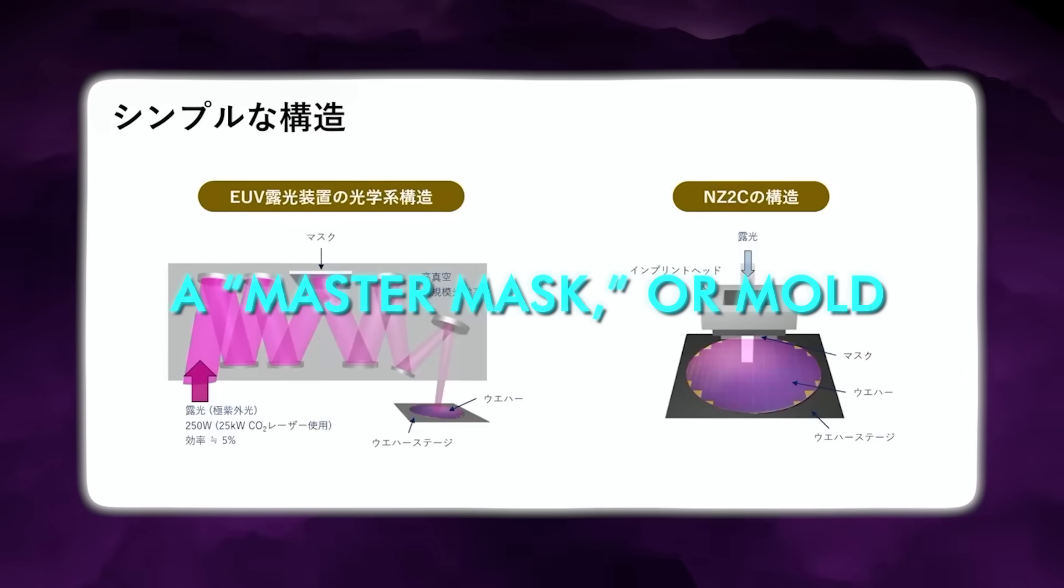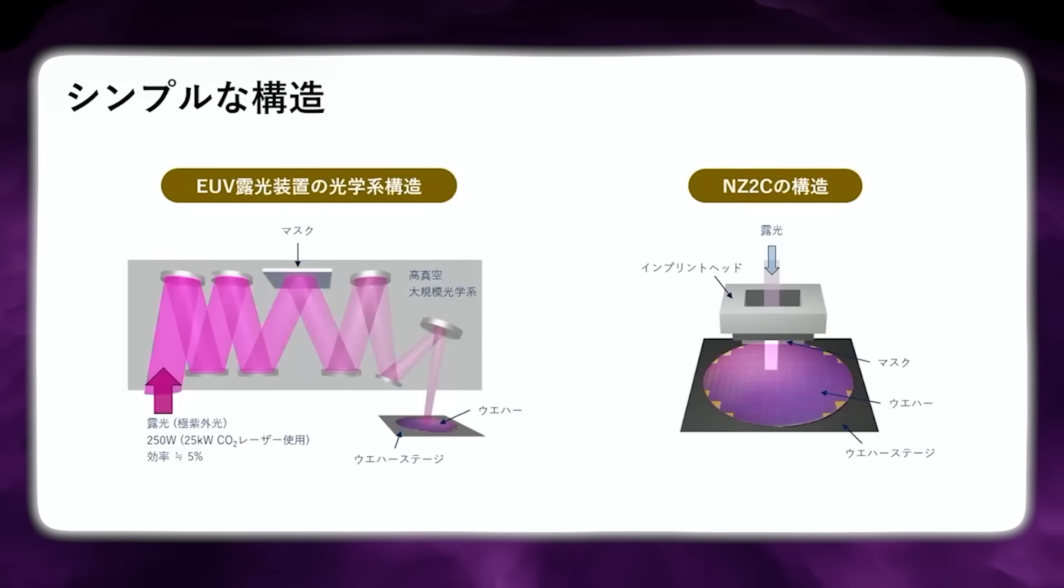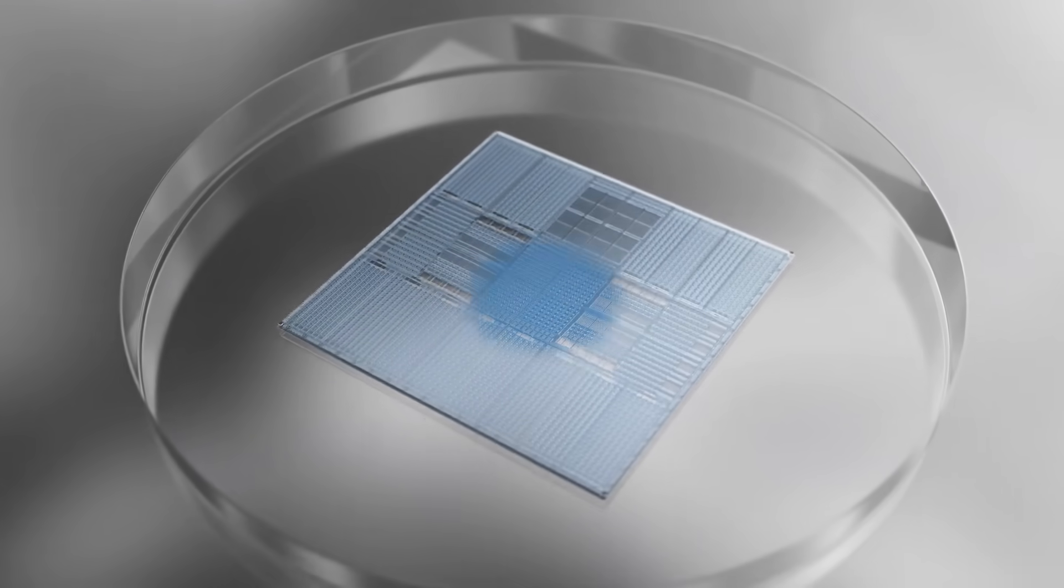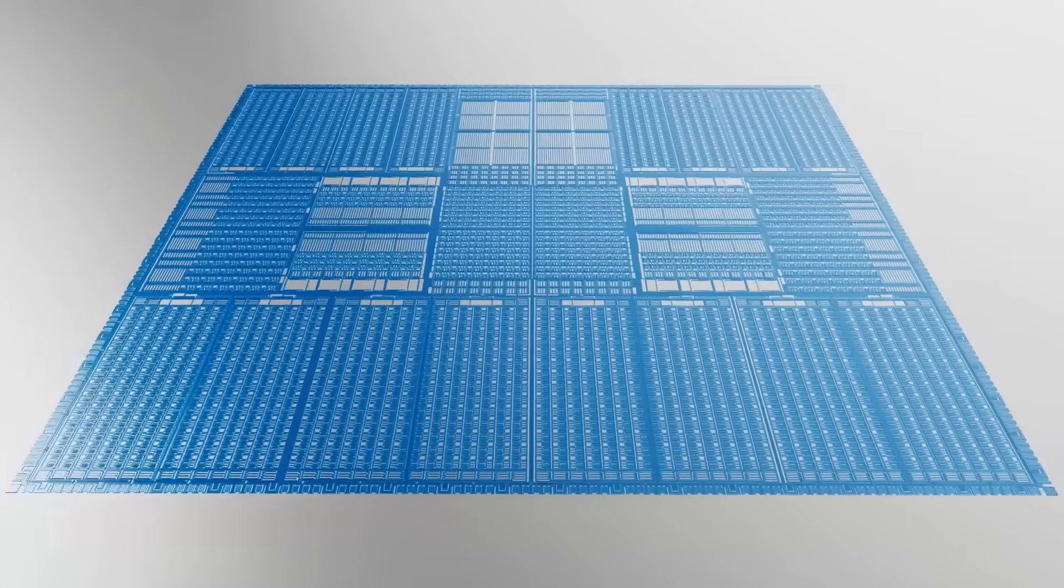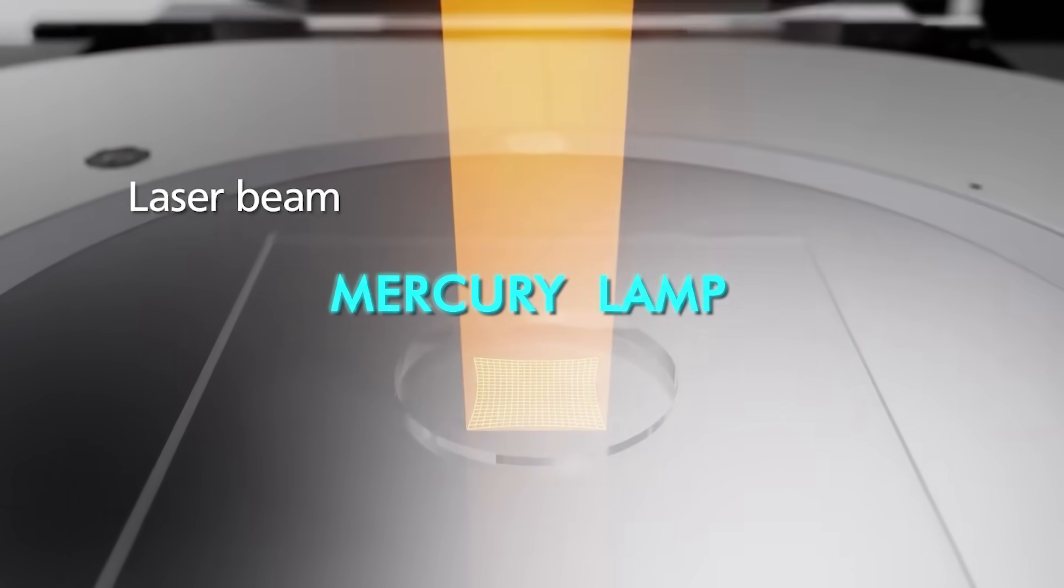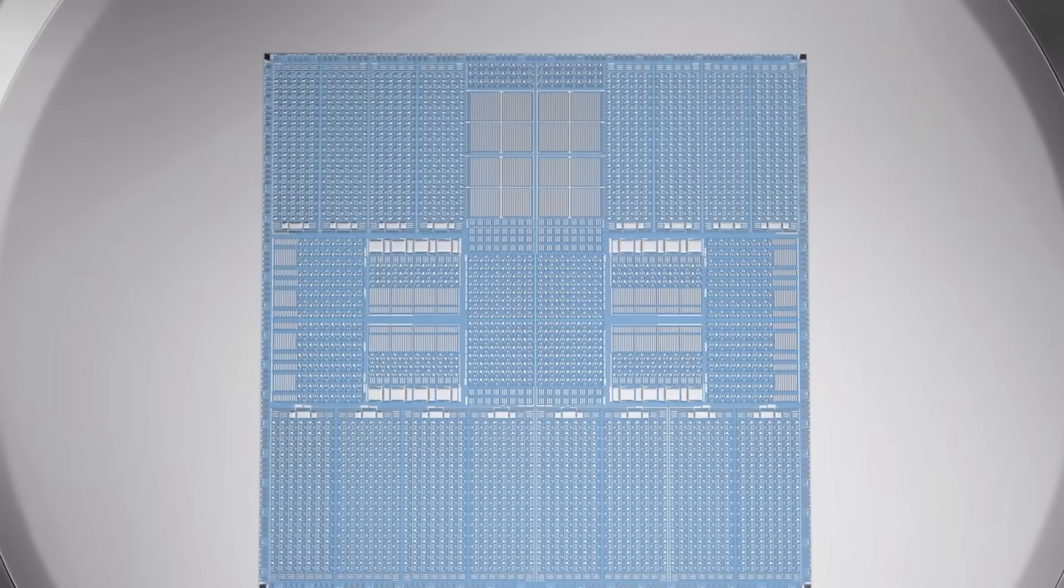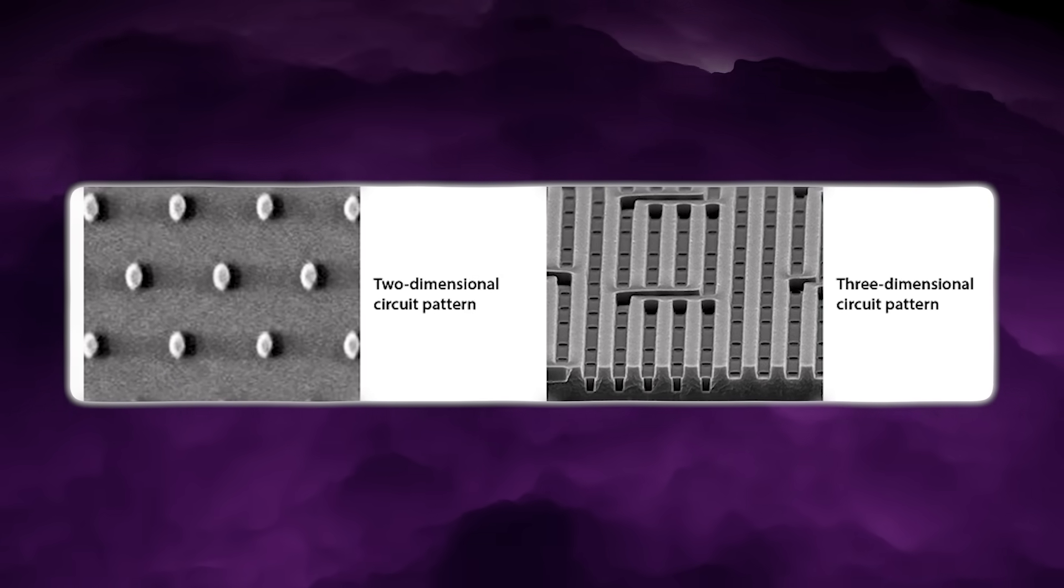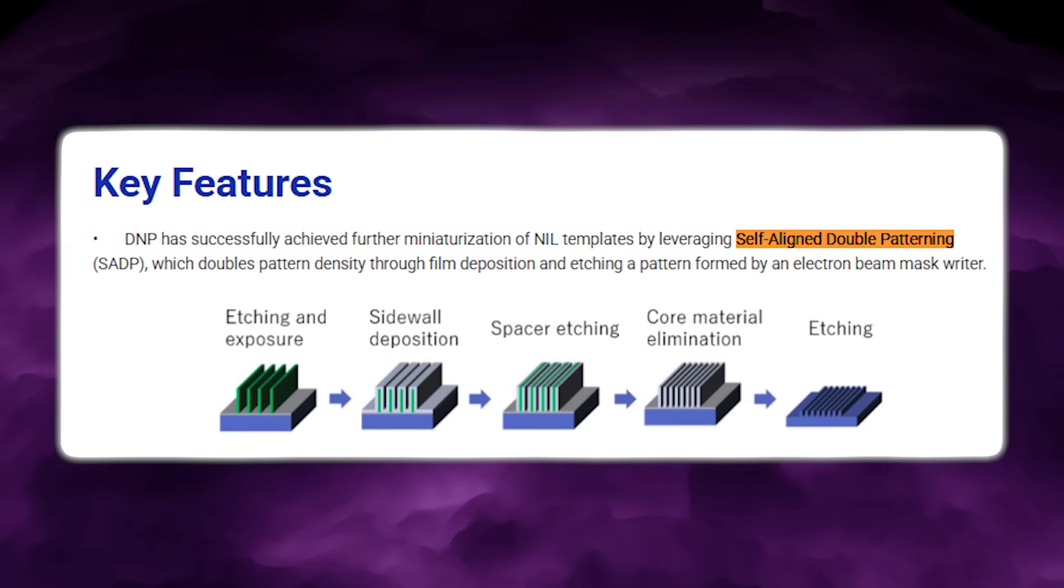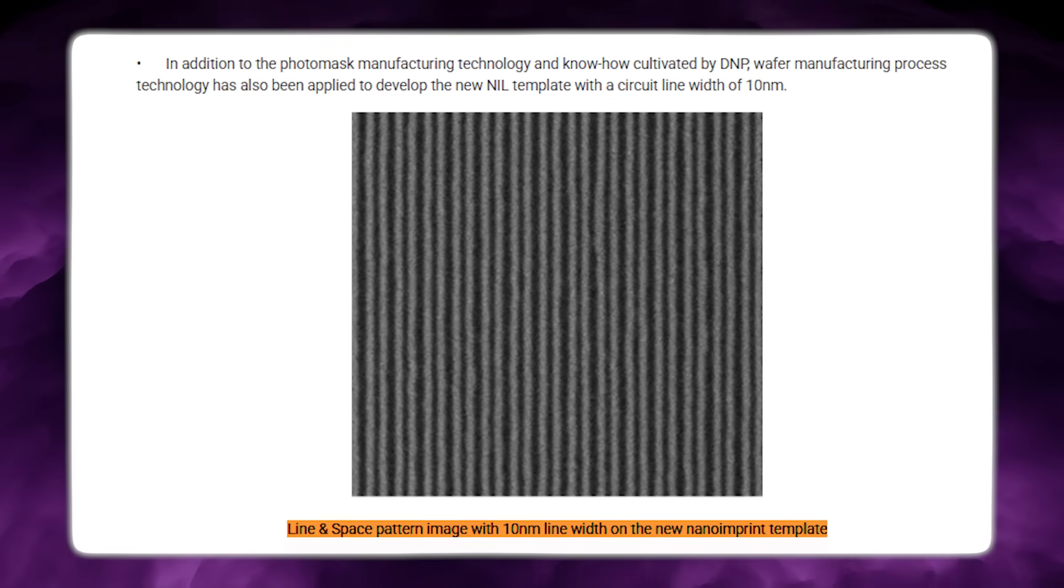But in NIL, a master mask, or mold, made of quartz is used to create multiple replica masks, also made of quartz. The replica mask is then pressed directly onto the surface of a wafer, as though it were a stamp that's been coated with a liquid resin called a resist. Ultraviolet light from a mercury lamp, the kind used in chipmaking back in the 1970s, is then applied to solidify the resin and allow the mask to be removed from the wafer. Thus, the same pattern from the master mask is stamped onto the resist on the silicon. And just as in photolithography-based chipmaking, that pattern guides the series of etching, deposition, and other processes needed to create transistors and interconnects.